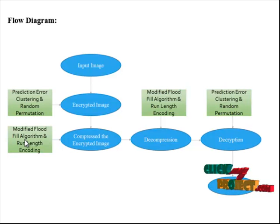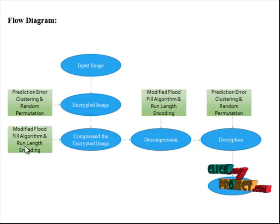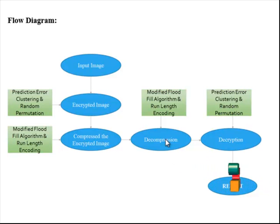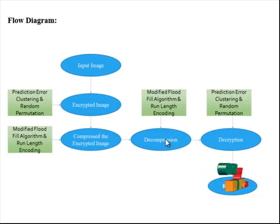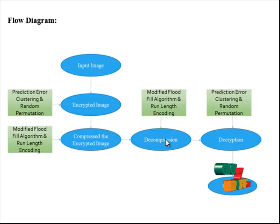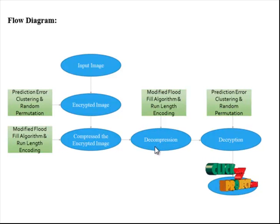Run-length encoding (RLE) is a very simple form of data compression in which runs of data are stored as a single data value and count, rather than as the original run. This is most useful on data which contains many such runs. RLE works by reducing the physical size of repeating strings of characters. This repeating string, called a run, is typically encoded into two bytes. In the decompression part, the reversal of the compression algorithm is proposed — the modified flat field algorithm and run-length encoding are reversed. The receiver divides the bitstream into L segments, each associated with a cluster of prediction errors, and run-length encoding is applied to each segment.